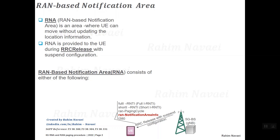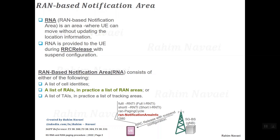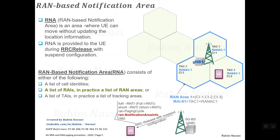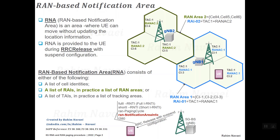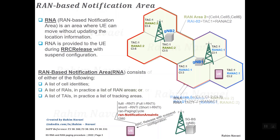RNA consists of either a list of cell IDs, a list of RAN area IDs, or a list of tracking area IDs. In this example, RNA is based on a list of RAN areas. RNA consists of RAN area IDs — in this example, two RAN areas: RAN area 1 and RAN area 2, and the RNA consists of both RAN area 1 and RAN area 2.